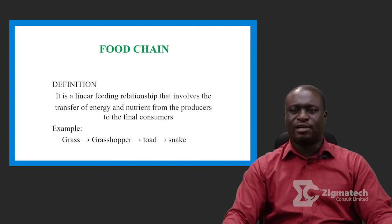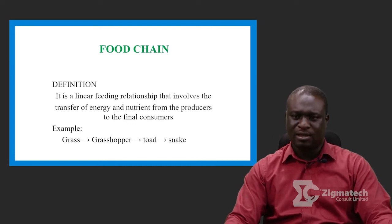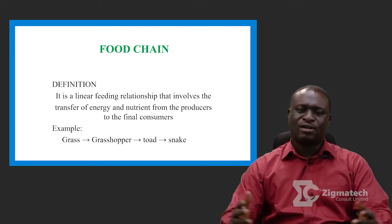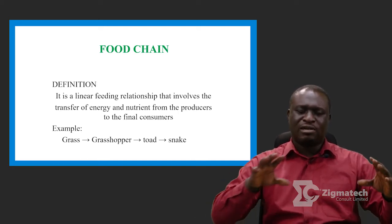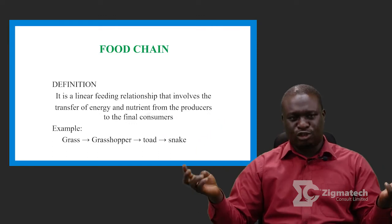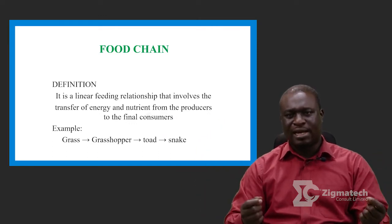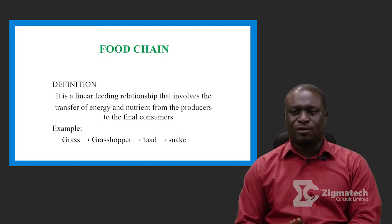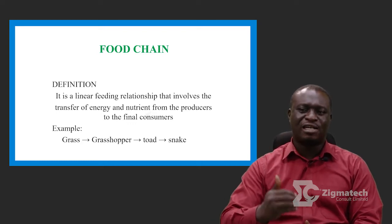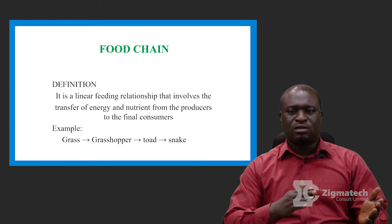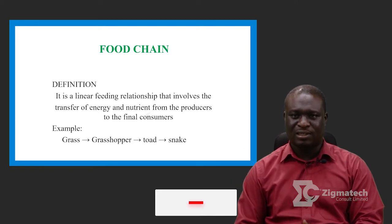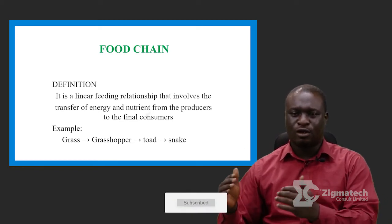The next thing to look at is what we call food chain. Before I define it, I'd like us to understand that in an ecosystem there is a flow — a chain flow of energy as well as food. A food chain can be defined as a linear feeding relationship that involves the transfer of energy and nutrients from producers to final consumers.